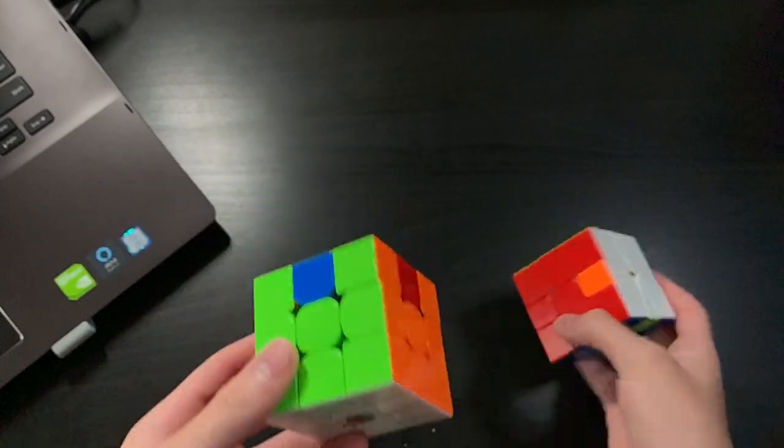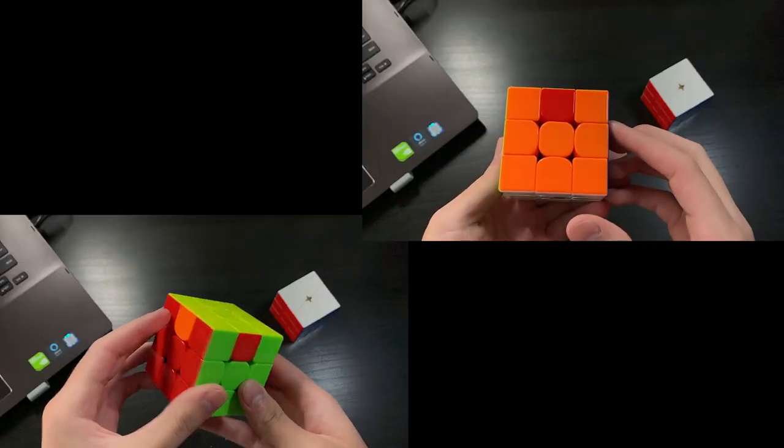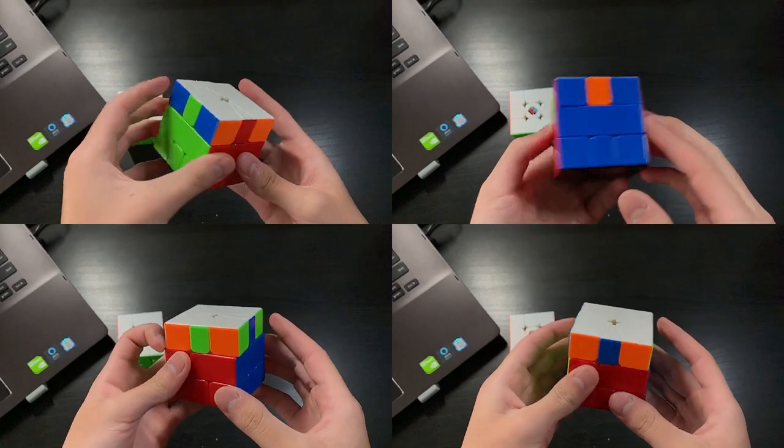On 3x3, the only EPLL cases you can get are Hperm, Zperm, or either of the Uperms. These are also cases on square one.